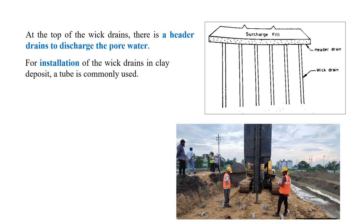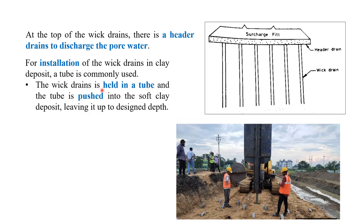At the top of the wick drains there is a header drain to discharge the pore water — this is nothing but the sand blanket or granular blanket. For installation of the wick drain in clay, a steel tube is commonly used. The wick drain is held in the tube in the form of a roll.